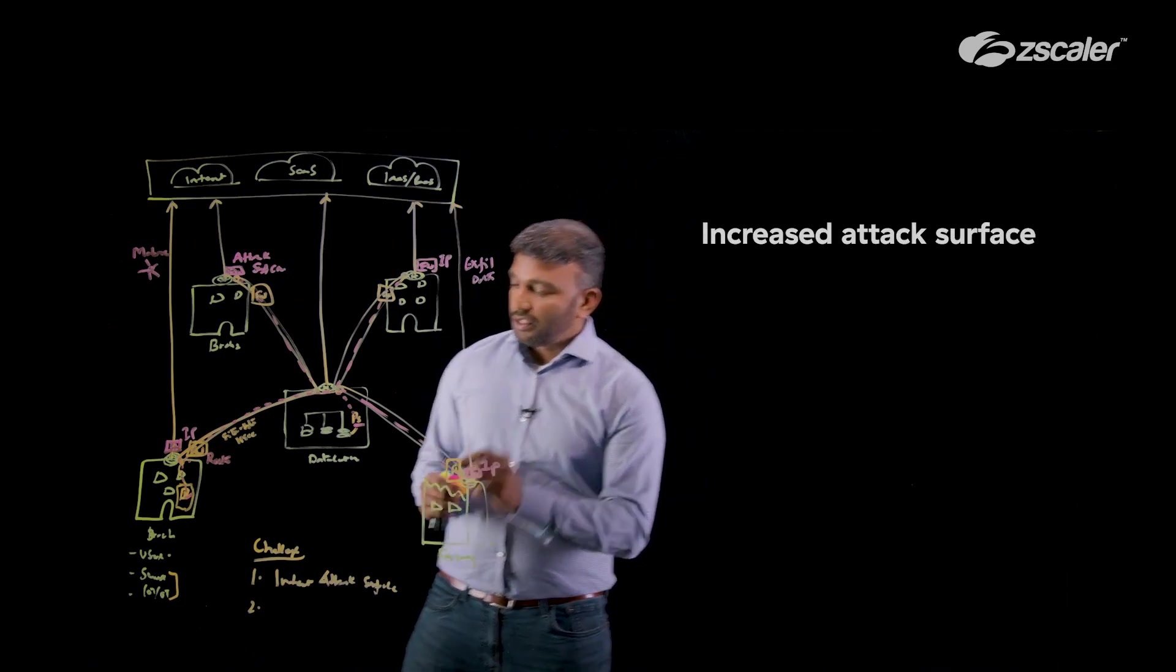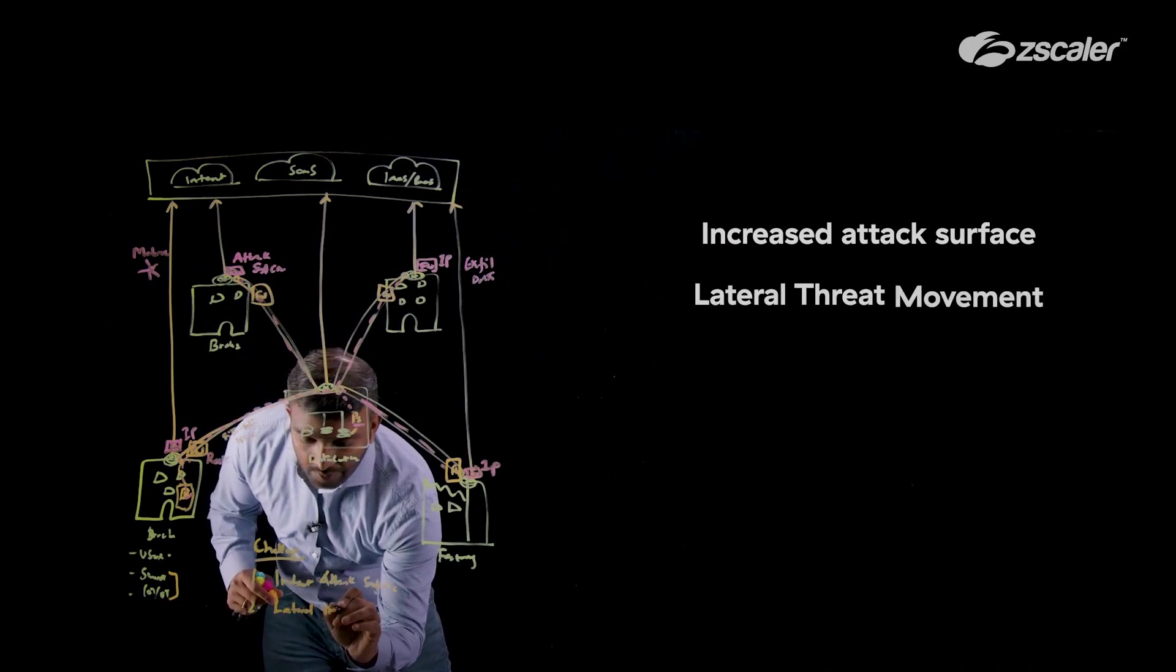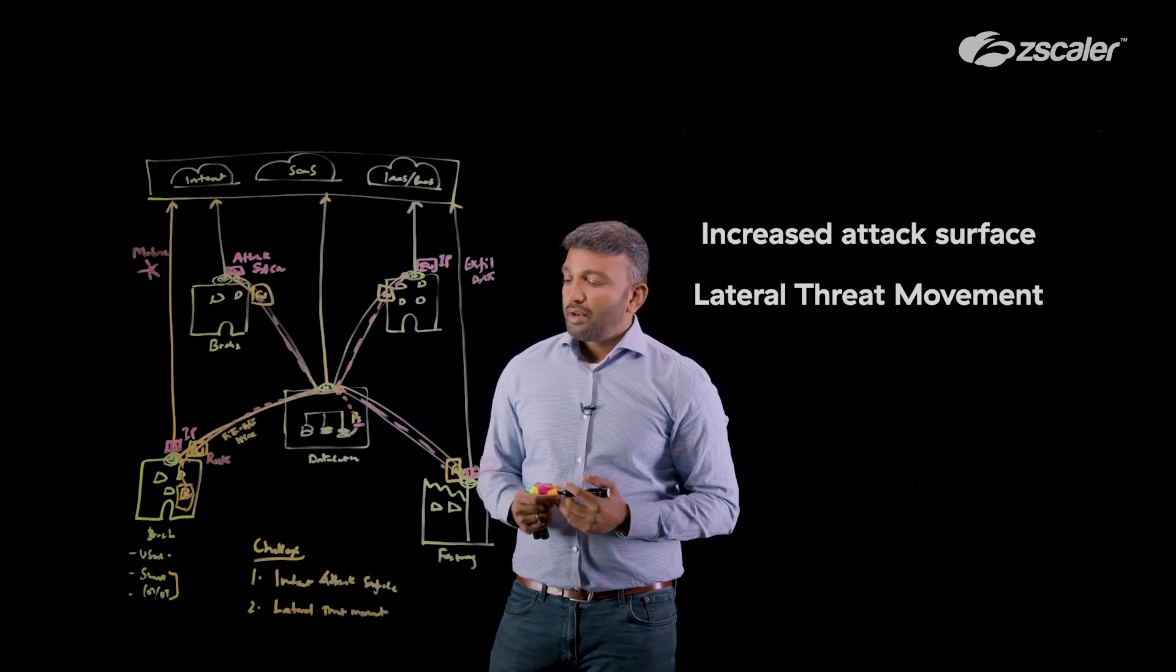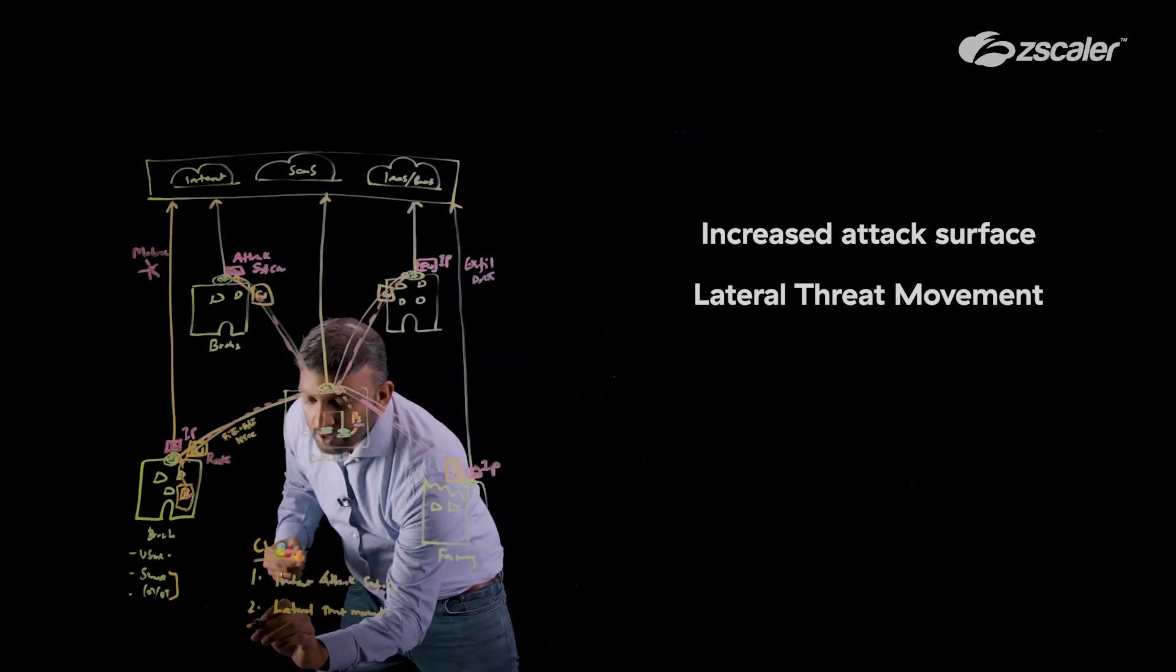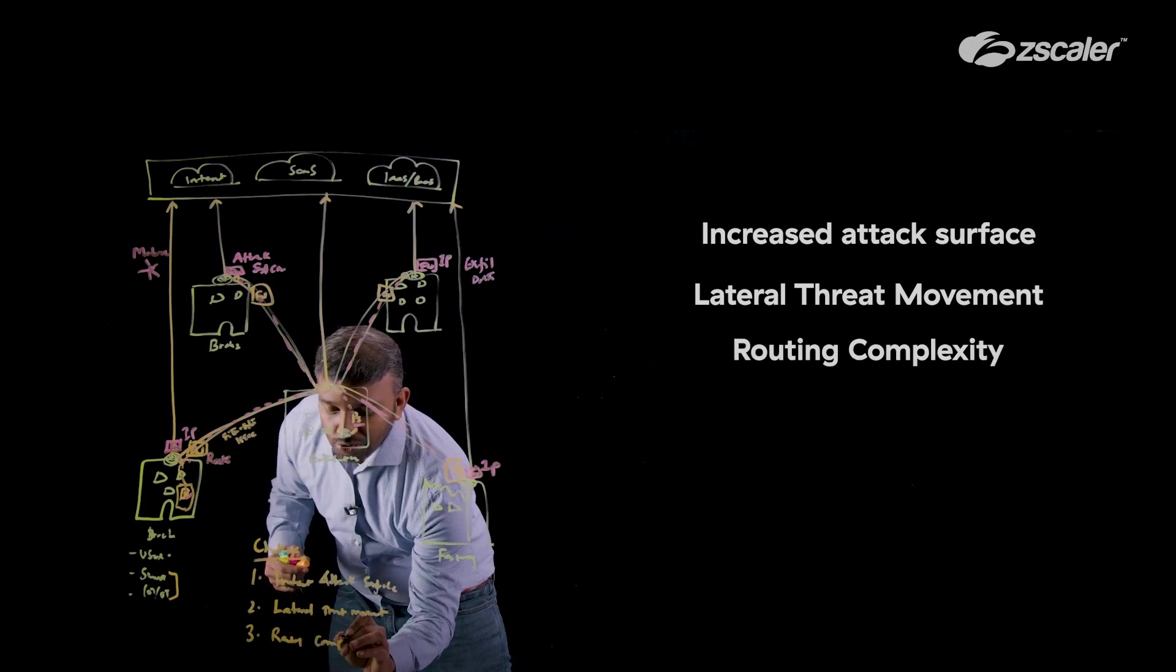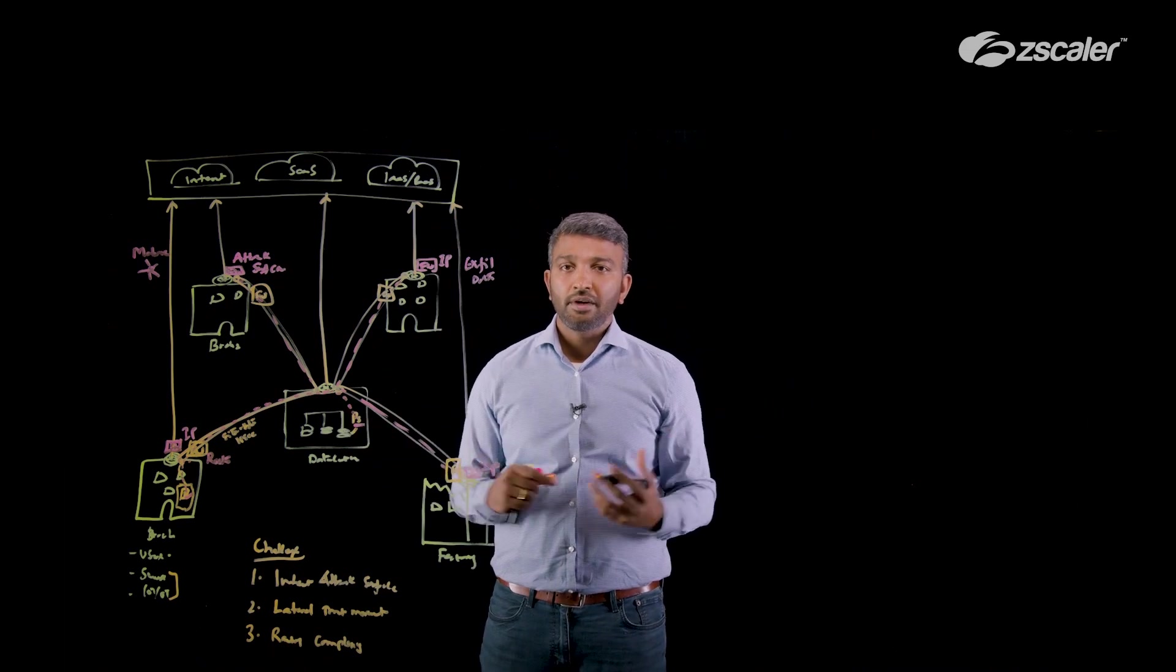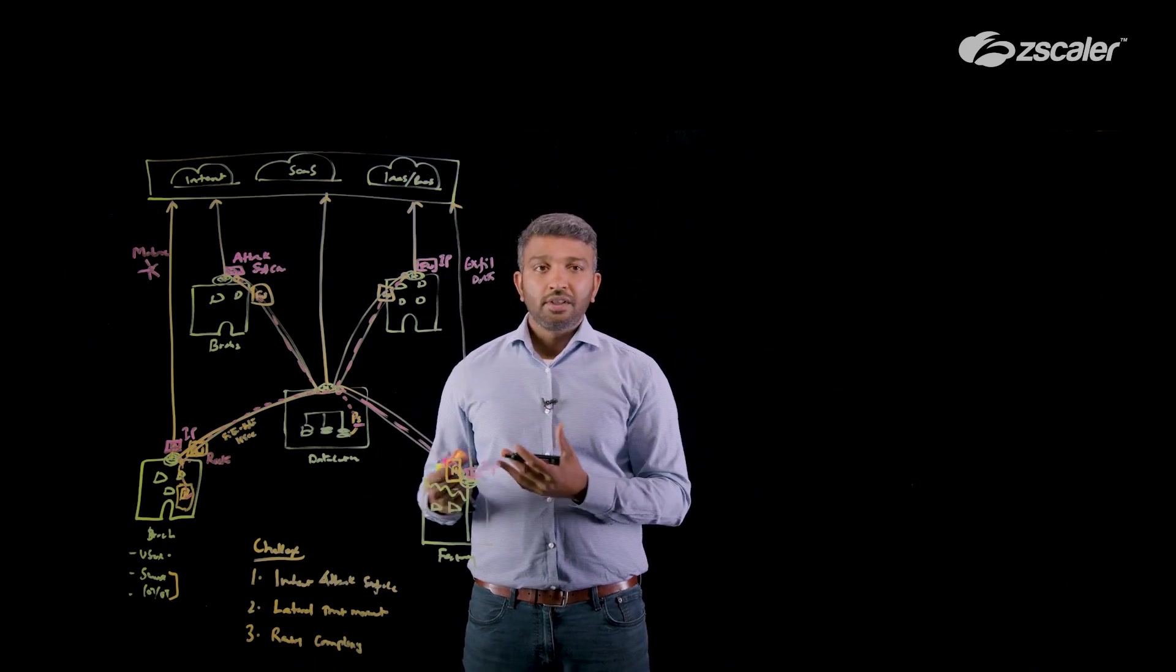The challenge with existing traditional WANs when it comes to lateral threat movement is leveraging firewalls which is a much inefficient way. And not only that, if you look at how the connectivity happens, there is a huge challenge of routing complexity. As you start building out your network and add more new branch offices or mergers and acquisitions, your networks keep becoming bigger and bigger. And you have to constantly enhance your routing complexity associated with that design.